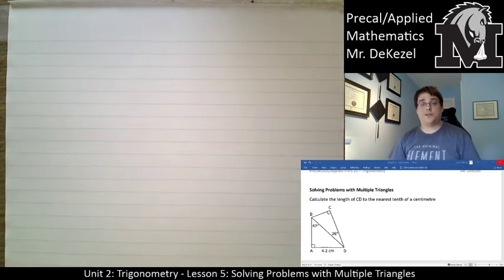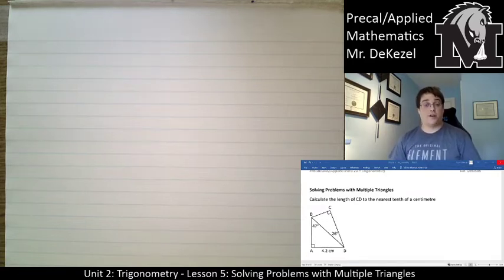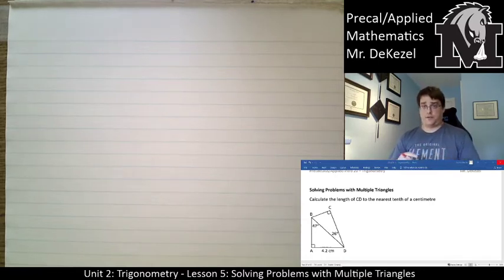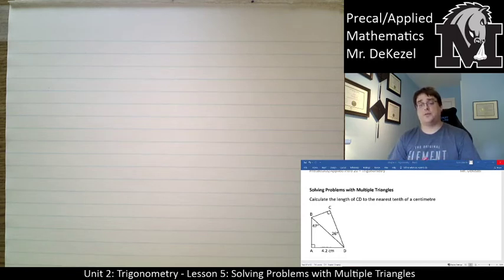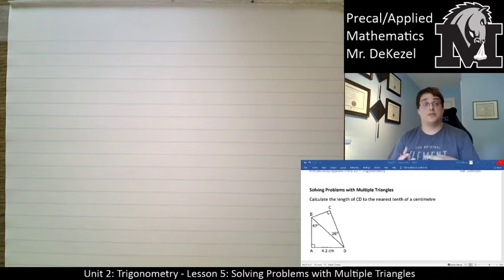Hello everyone, welcome to the final installment of the trigonometry unit. This is lesson five: solving problems with multiple triangles. There are going to be a couple of different types of problems, and figuring out which method to use is going to be the most difficult part. Once we find out what method to use, it's generally fairly straightforward — it's just SOH CAH TOA that we've been doing the entire unit.